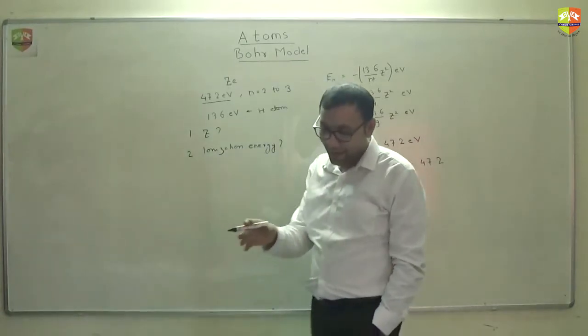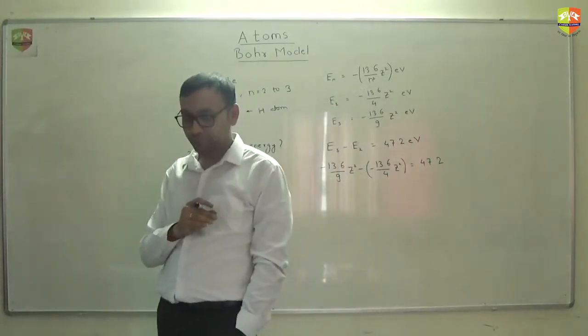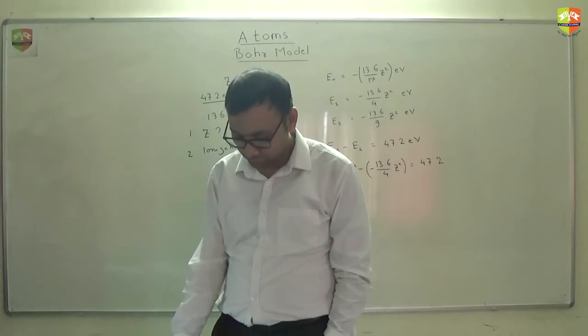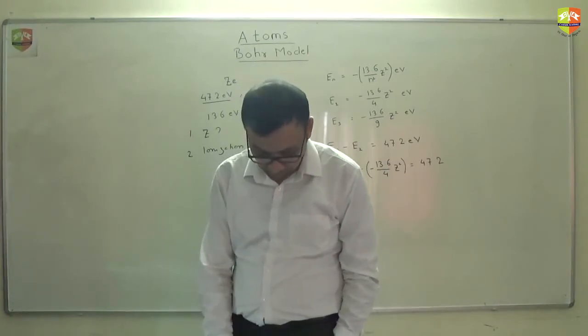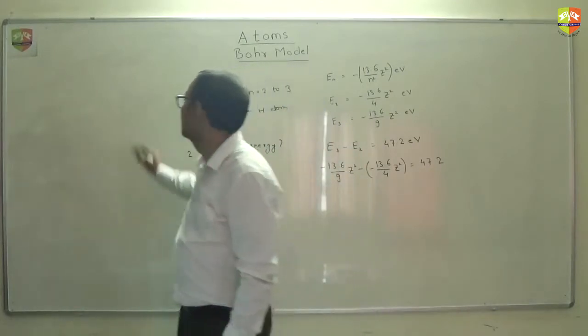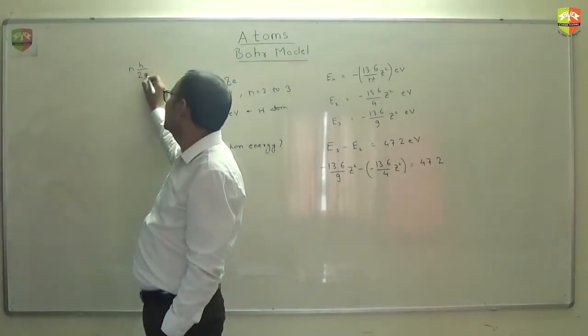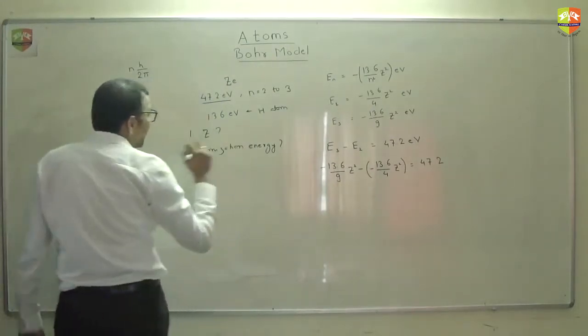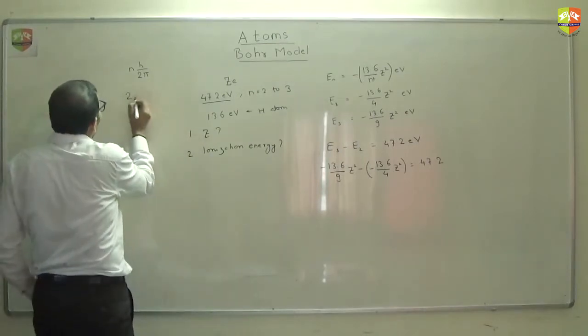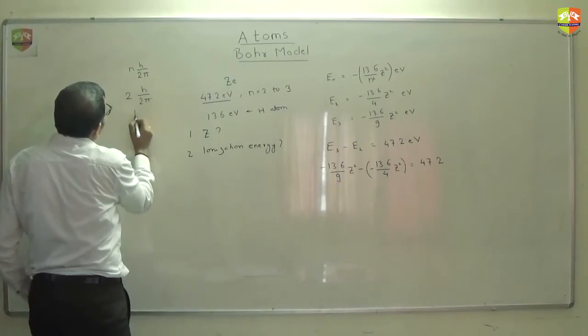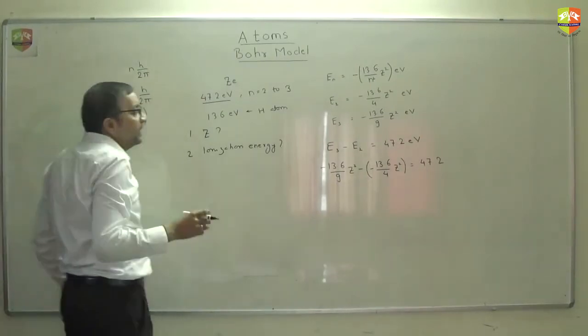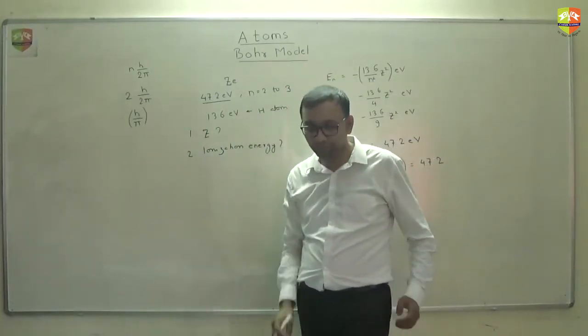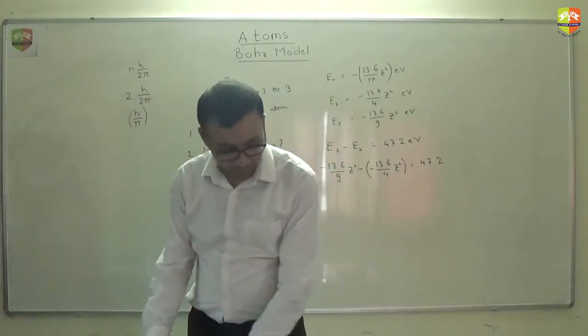Next. How will you get angular momentum of the electron in the first Bohr orbit? Simply it is nh by 2π. Doesn't matter what is the atomic number. Mvr should be equal to nh by 2π. So for n equal to 2, it will be 2 times h by 2π, so it will be h by π only. It doesn't matter what is the atomic number. Angular momentum will always be equal to nh by 2π.